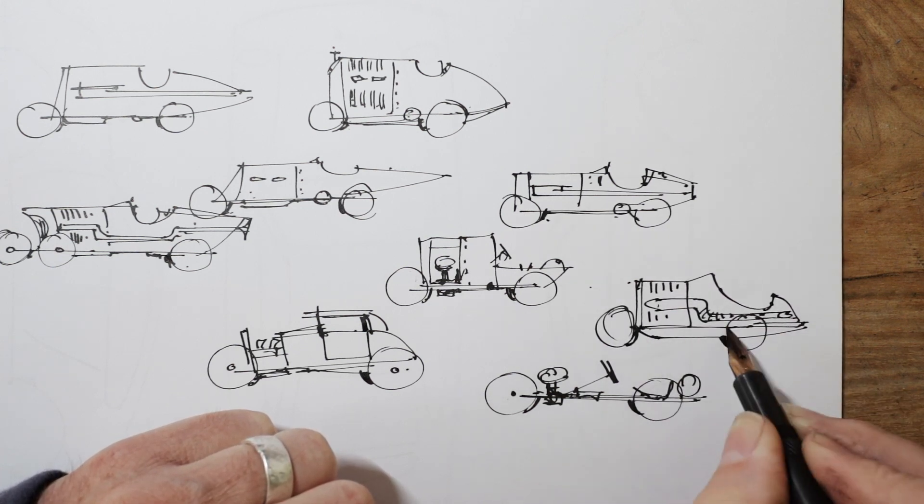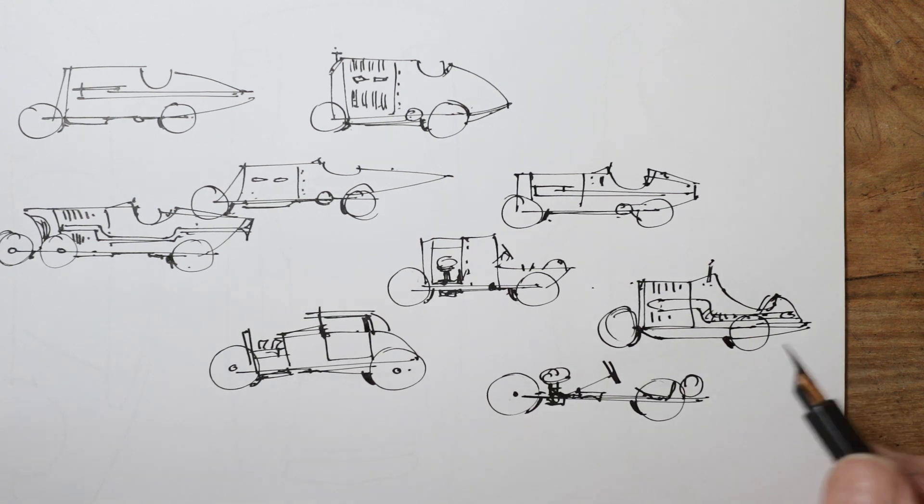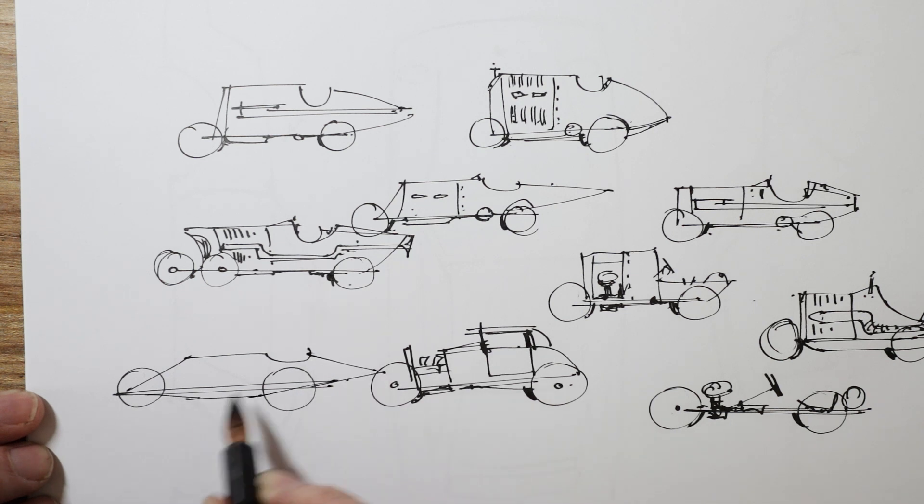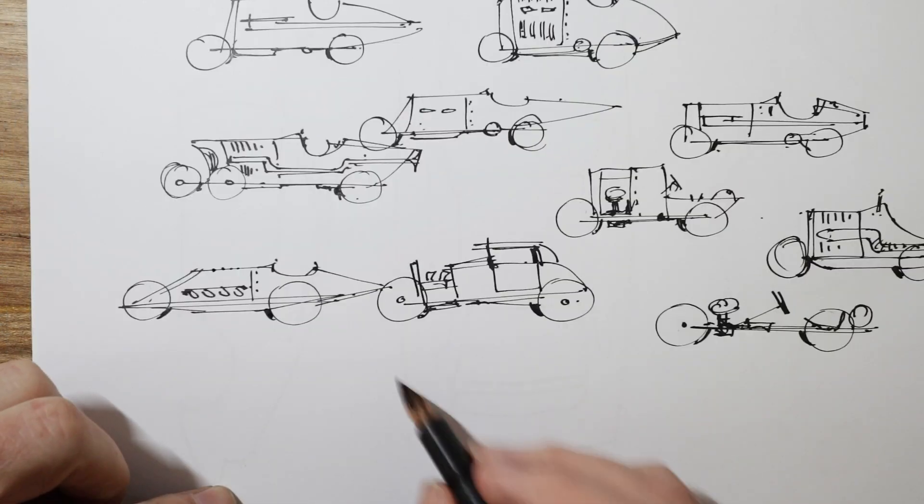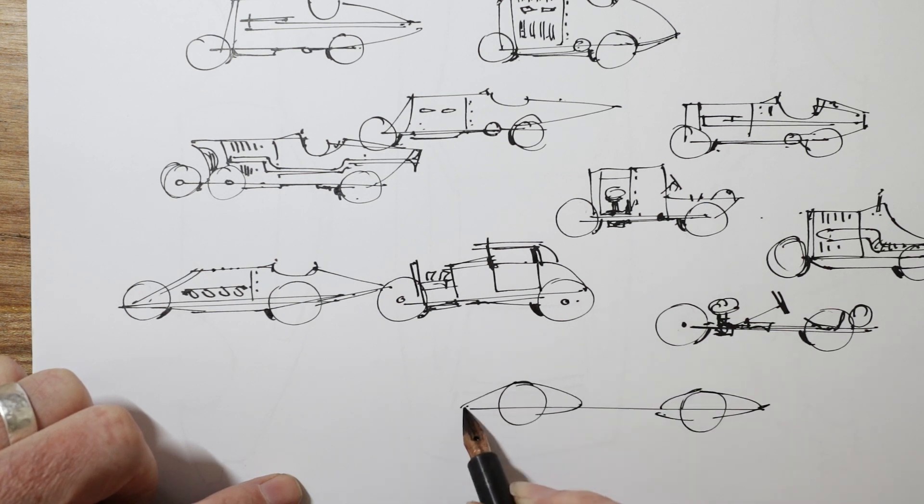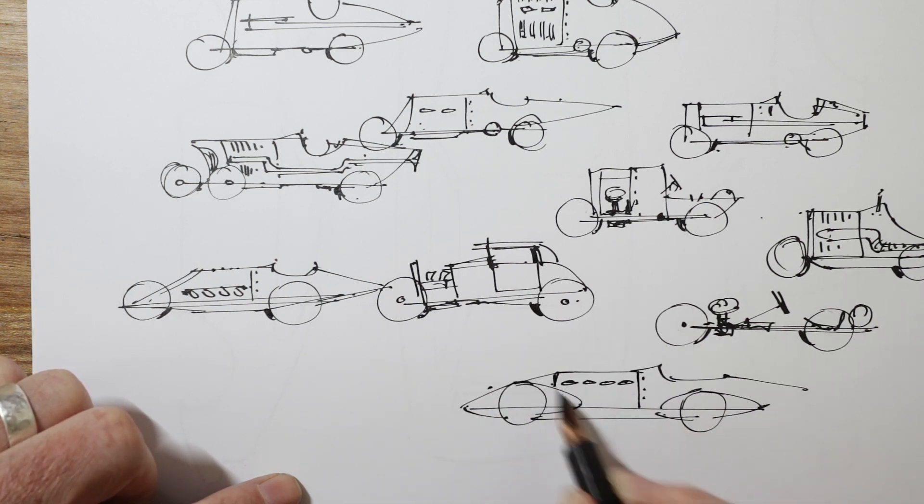This page of little thumbnails took about 12 minutes. I've drawn a lot of old cars, so it might take you a little bit longer, but it shouldn't take much longer because all you're really doing is drawing a couple of circles and sticking some boxes and triangles on top and playing around with the proportions.